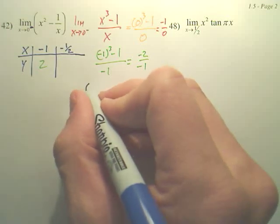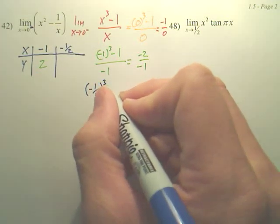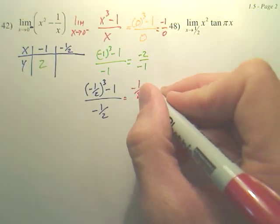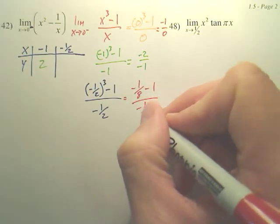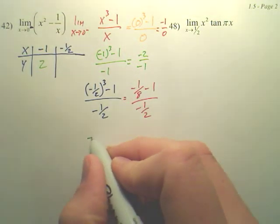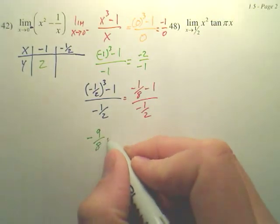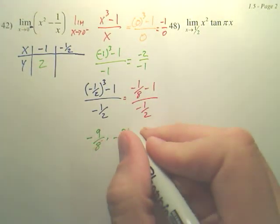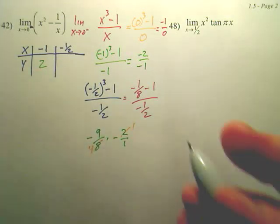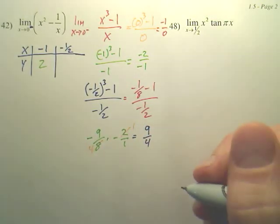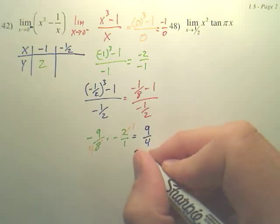And we're also going to plug in negative 1 half. Negative 1 half cubed minus 1 over negative 1 half. That would give us negative 1 eighth minus 1 over negative 1 half. I know this is kind of annoying, because all these ugly numbers. But this would be negative 9 eighths times negative 2 over 1. You flip the bottom and multiply. These two can cancel, leaving you 1 and 4. And then when you multiply to the positive, this is going to be 9 over 4, which is 2 and 1 fourth.